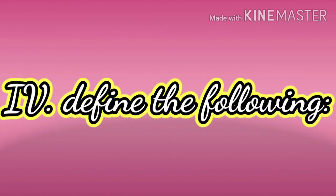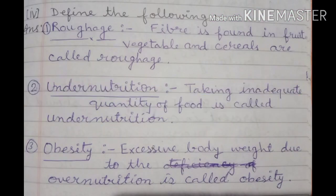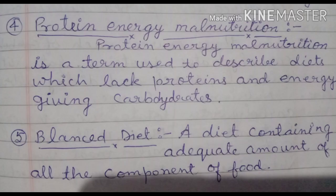Now fourth: define the following. First: roughage — fiber found in fruits, vegetables and cereals is called roughage. Second: undernutrition — taking inadequate quantity of food is called undernutrition. Third: obesity — excessive body weight due to overnutrition is called obesity.